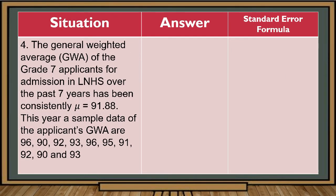For situation number 4, the general weighted average or GWA of the Grade 7 applicants for admission in LNHS over the past 7 years has been consistently at a population mean equal to 91.88. This year, the sample data of the applicants' GWA are: 96, 90, 92, 93, 96, 95, 91, 92, 90, and 93. To determine whether the variance is known or unknown, we check the given: the population mean is 91.88.